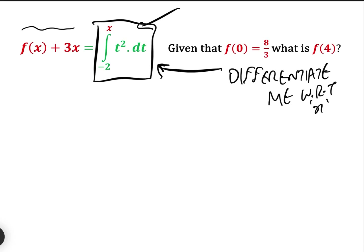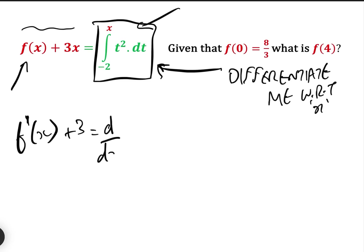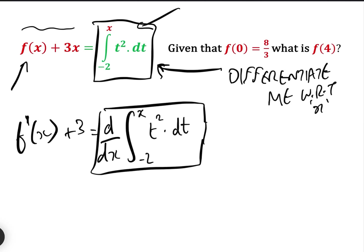So let's differentiate both sides with respect to x. Therefore we get f'(x) — differentiating this side — plus three, so that's just one, equals d/dx of the integral between x and minus two of t² dt. By the fundamental theorem of calculus, that has all of the elements: it's got the d/dx, it's got the x, and it's got a function of t. We know that that equals x².